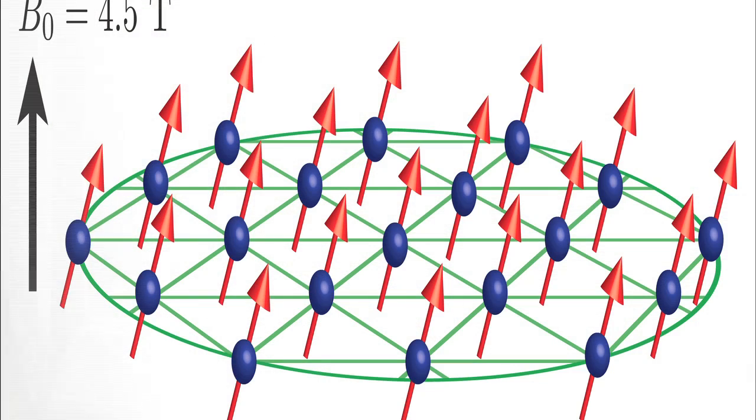These ions can form a two-dimensional crystal. So this is a crystal which is a single layer thick, and the ions form a triangular lattice in this crystal.